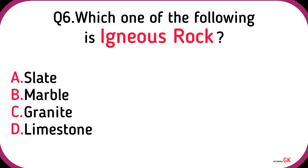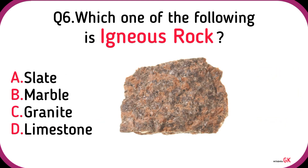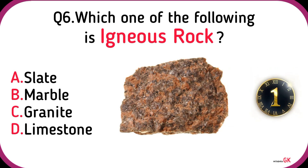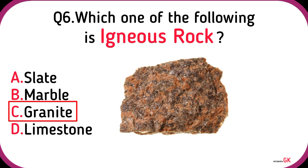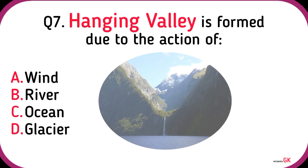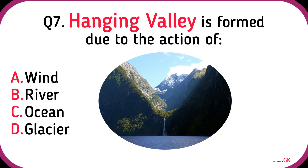Earthquake. Which one of the following is an igneous rock? Granite. Hanging valley is formed due to the action of?